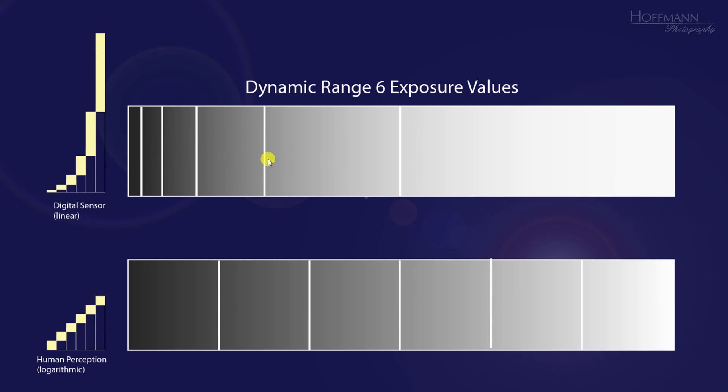The horizontal gradients are exactly the same as the vertical bars. The horizontal presentation is just for convenience. Let's assume that our subject has a dynamic range of six exposure values, from black on the left to white on the right. The reason I chose six exposure values is simply that the resulting numbers remain easily manageable.